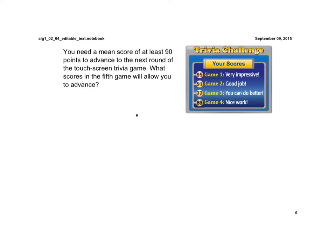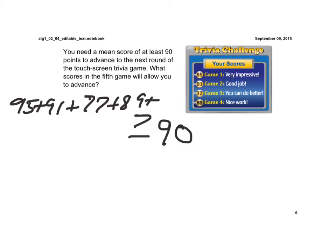So we have to be at least, so that's greater than or equal to, a 90. But we have scores of 95, 91, 77, 89, plus our fifth game, which we're going to call n, all divided by 5. That must be greater than or equal to 90.